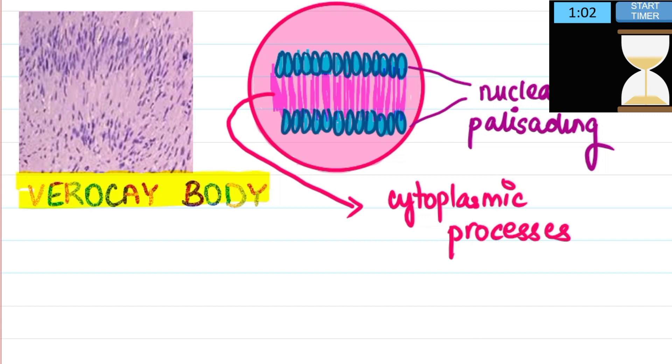Please try to correlate this with the actual image. Two rows of nuclear palisading and cytoplasmic processes in between.